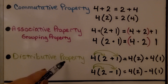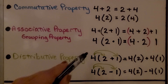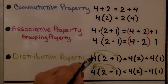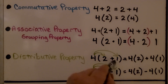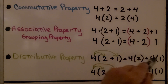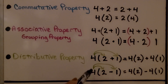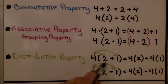The distributive property — that's the one I always teach with the mother bird. We distribute the 4 to the 2 and get 4 times 2, added to 4 times 1. We can also do it over subtraction: 4 times 2 minus 4 times 1.